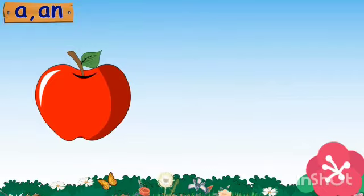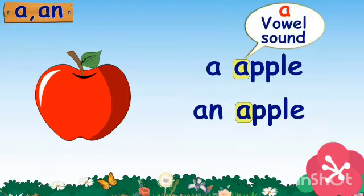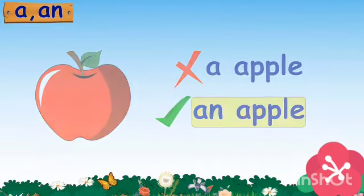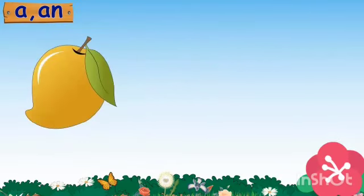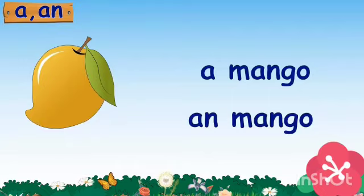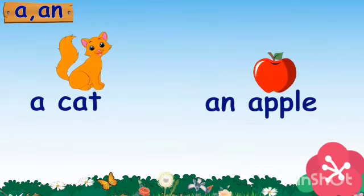What is this? This is an apple. It is a single apple, so we have to use A or AN before it. Which one is correct? We must use AN apple, not A apple. Next example — this is a single object, so we will use A or AN before it. It starts with the sound of M, so we will choose A and say this is a mango.